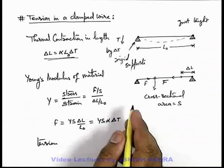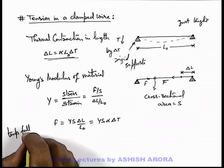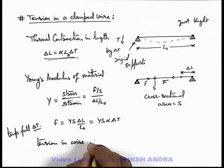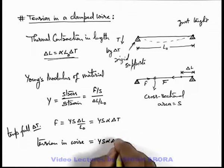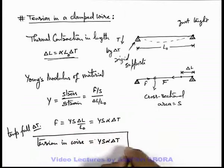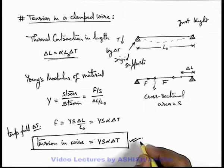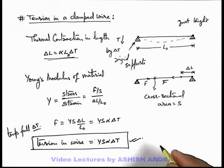So due to fall in temperature, if temperature fall is delta T, and due to fall in temperature by delta T, we can write tension in wire is equal to YS alpha delta T. So just keep this thing in your mind. This is also a very important result that is quite useful in different kinds of numerical problems.